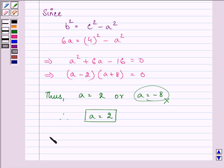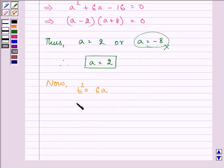Now, b² was found out to be 6a. That means b² is equal to 12.